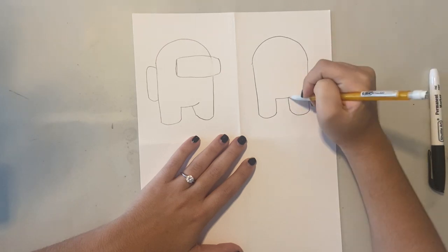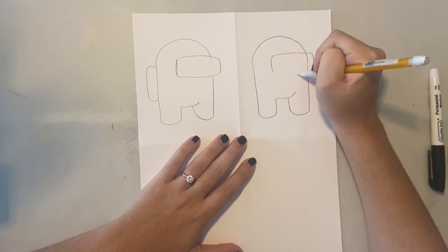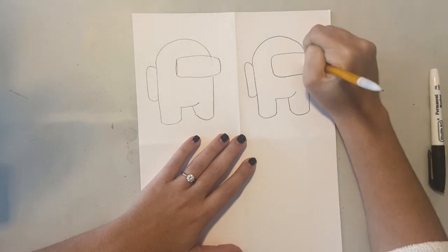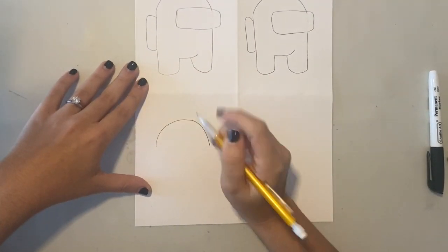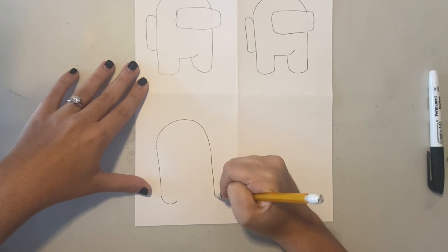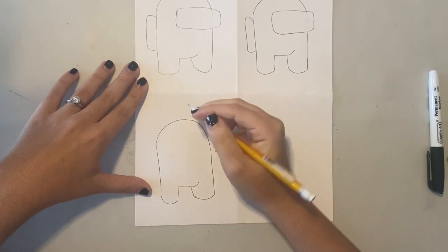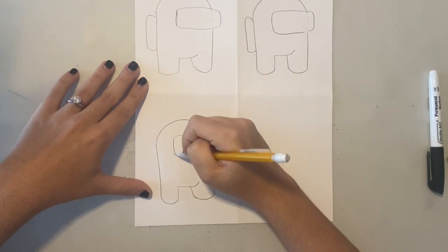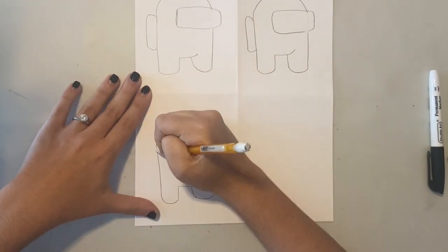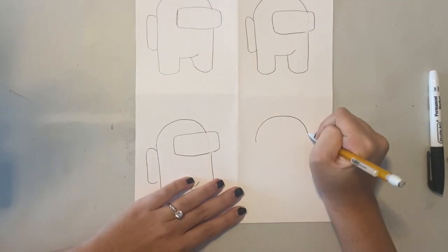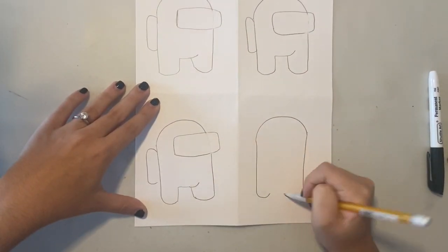If you don't play Among Us or aren't a fan of Among Us, you can draw other pictures or symbols as long as you draw the same thing in all four sections. So for example, you could do four hearts or four stars or four smiley faces as long as you're drawing the same thing in all four sections.